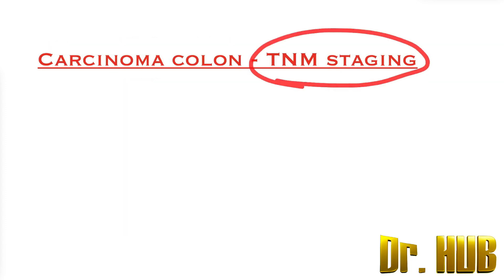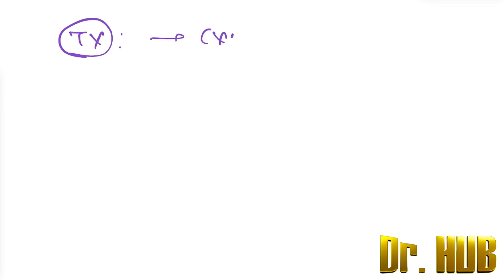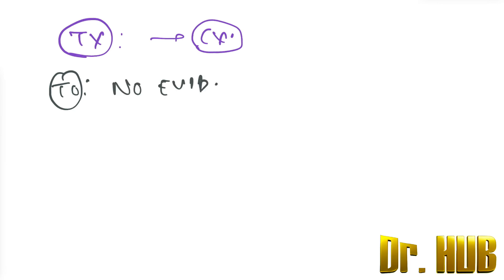We are looking at carcinoma of the colon and the TNM staging. To begin with the primary tumor: TX means it cannot be assessed. T0 means there is no evidence of cancer. TIS means carcinoma in situ. We are discussing this with respect to the 7th edition.